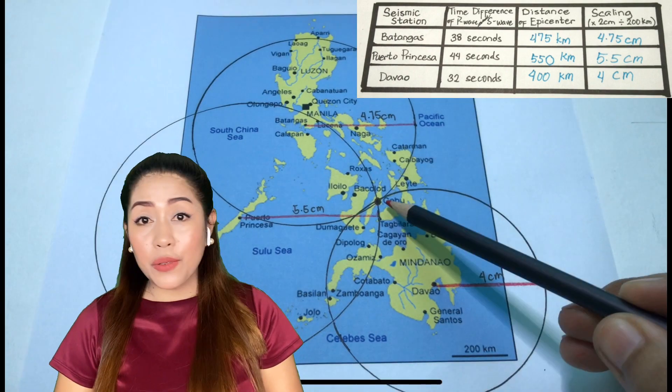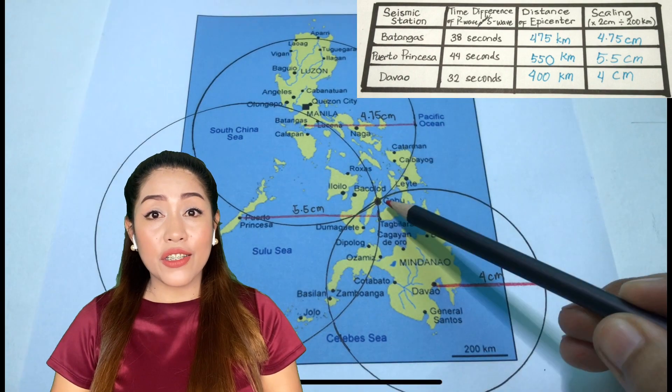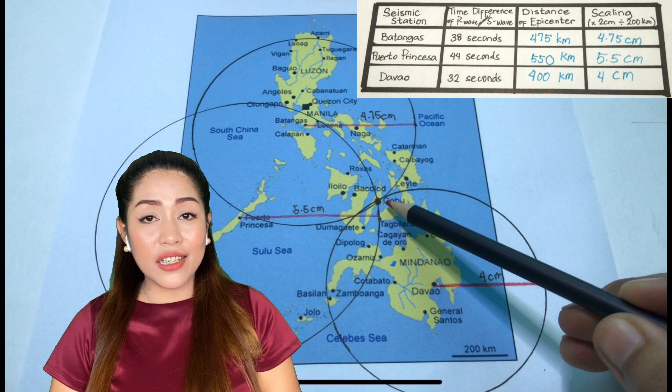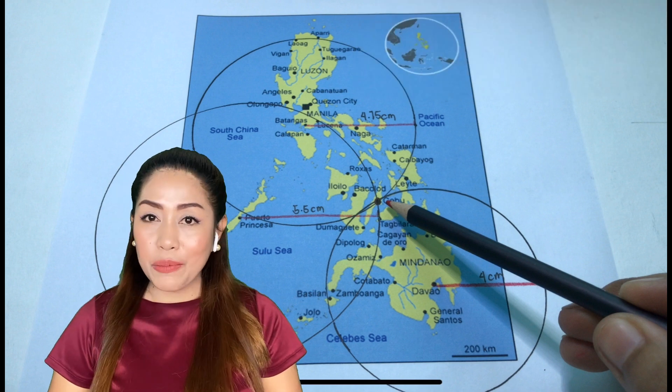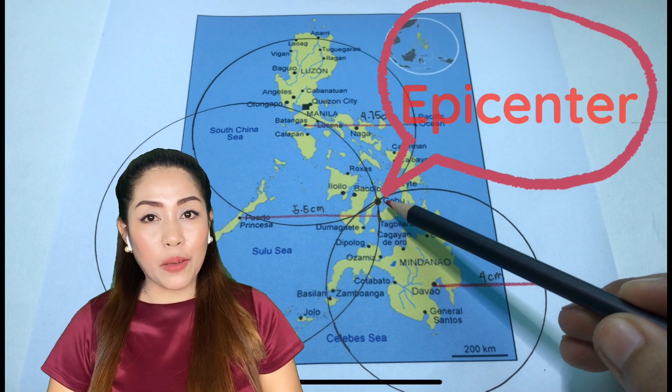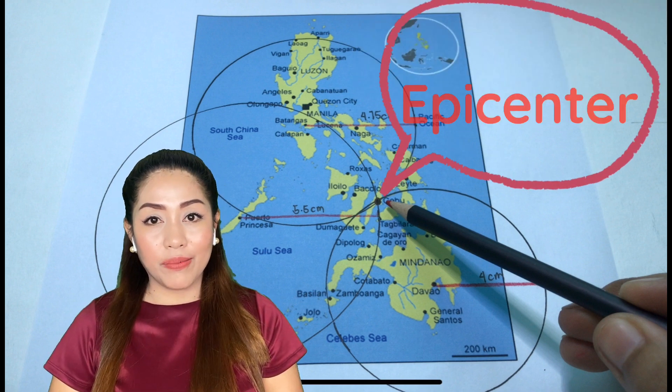The intersection point of these three circles is said to be the earthquake's epicenter.